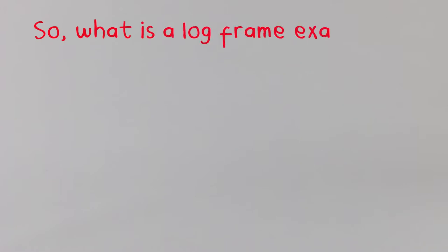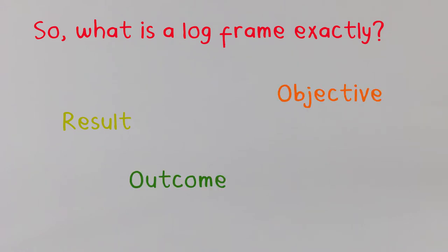So, what's the log frame exactly? If you're watching this video, you probably know the basics but are having some trouble with the details. Am I right? Like, what is the difference between a result, an outcome, an objective, an input, an output, etc., etc.? If this stuff confuses you, you're not alone.